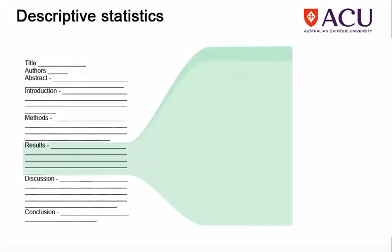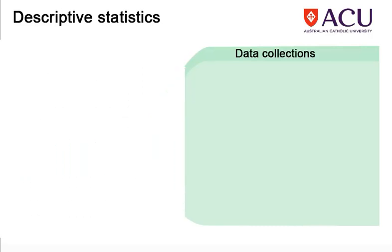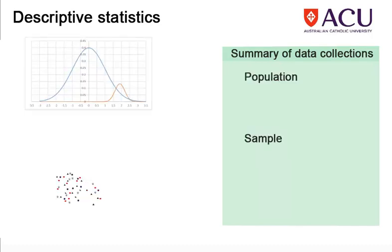The first part of the results section presents information about the data collections using a catch-all designation called descriptive statistics. Descriptive statistics are a statistical summary of the data. They may include information about both population and sample statistics and information about each variable considered in the study.